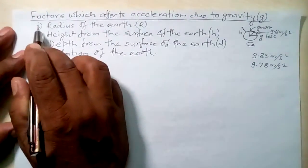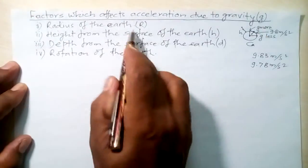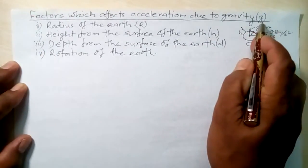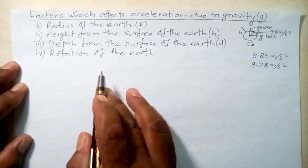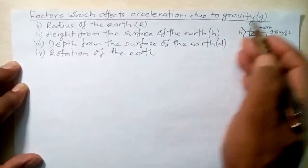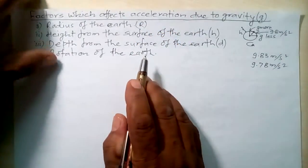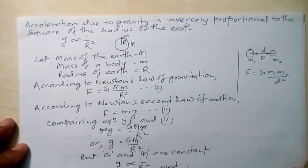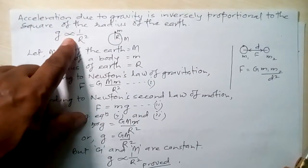In the previous class, I told you there are some factors which affect the value of small g — acceleration due to gravity. The first factor is the radius of the Earth, the second is height from the surface of the Earth, the third is depth from the surface of the Earth, and the fourth is rotation of the Earth. I was highlighting the relation between g and radius of the Earth, and I proved that acceleration due to gravity is inversely proportional to the square of the radius of the Earth.